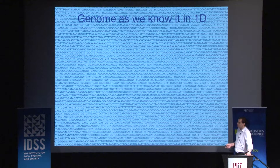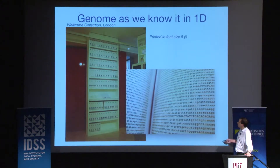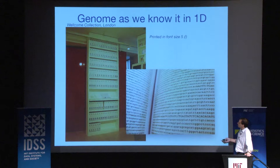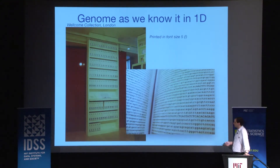We used to think about the genome, especially in computer science, as a text — a one-dimensional object where every letter is a base of DNA. There's a very nice exhibit in the Wellcome Collection London where you can browse your chromosomes and read them. These are volumes of the human reference genome printed at font size 5, giving an idea of the information content of the human genome.